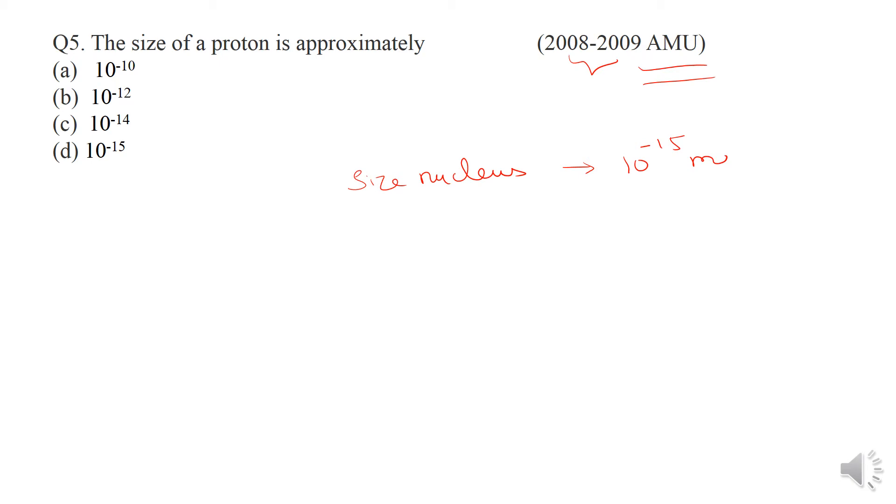Protons are present in the nucleus, and the size is 10 to the power minus 15 meter. The numerical value is small, so obviously proton is small. But we focus on the order here, so both nucleus and proton size is 10 to the power minus 15 meter.